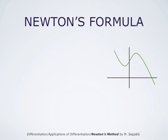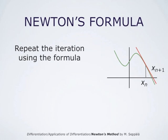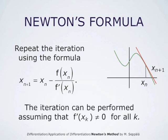This iteration can be repeated. If our current approximation of the solution is xn, we improve it by going up to the graph of f and drawing the tangent line at (xn, f(xn)). That line intersects the x-axis at our next approximation. The iteration formula is x_{n+1} = x_n − f(x_n)/f'(x_n), and this can be performed as long as f'(x_k) ≠ 0 for all k.